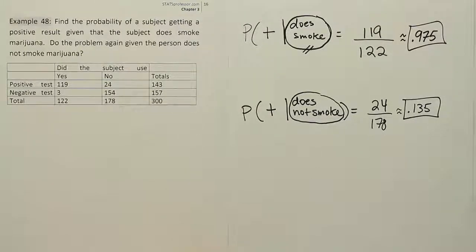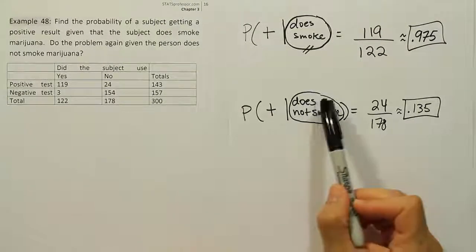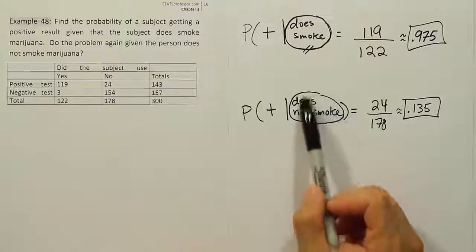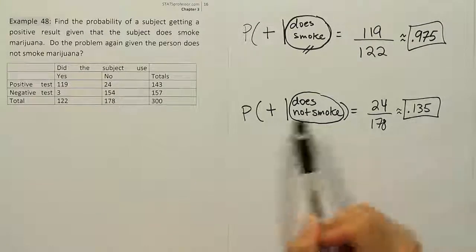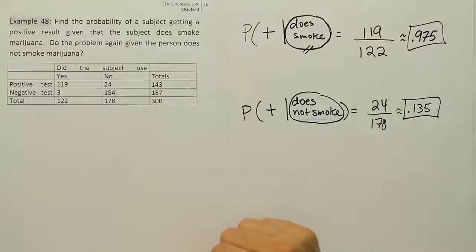You might say, hmm, well, how do I know it's correct? Like in this scenario, you know the person does not smoke. So that's a guarantee. The person doesn't smoke, but yet the person still has a 13.5% chance of being told by the test that he's a drug user.